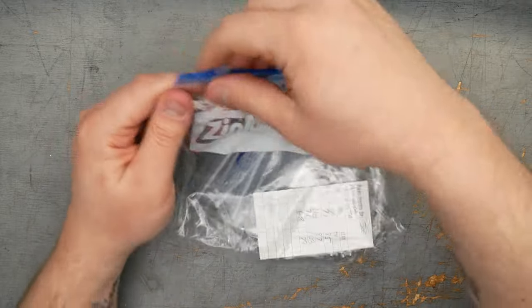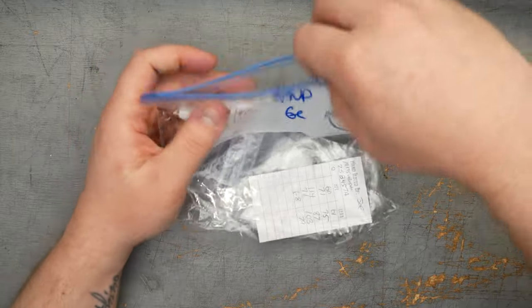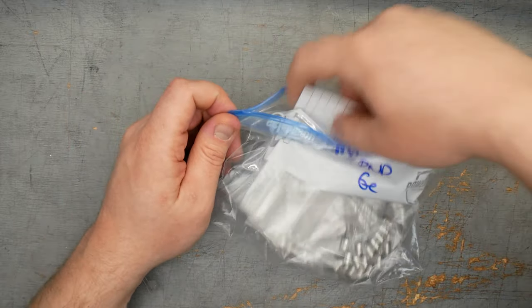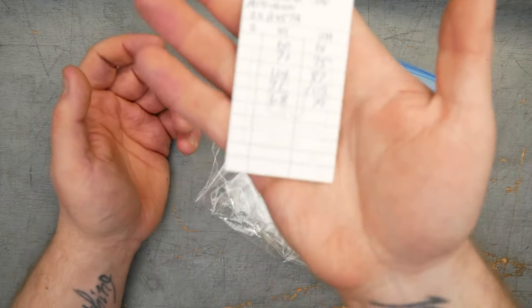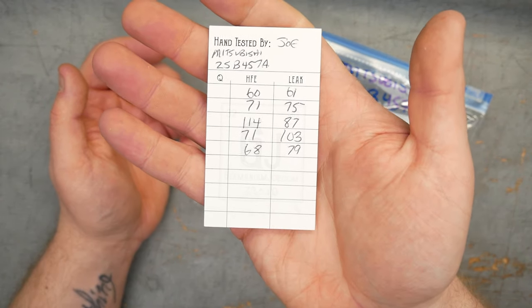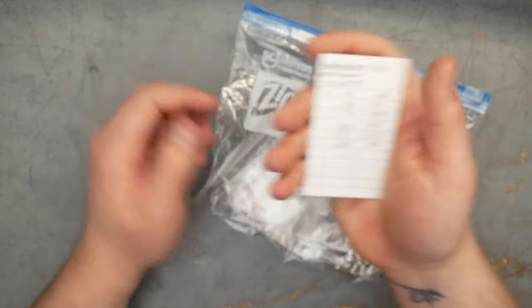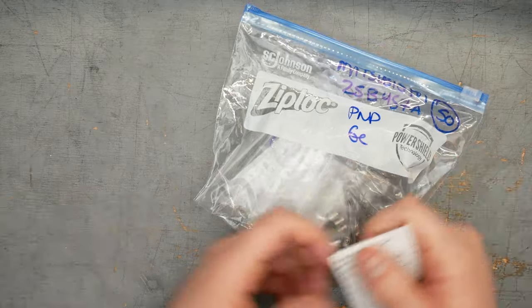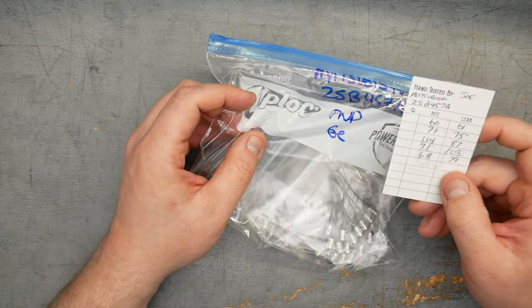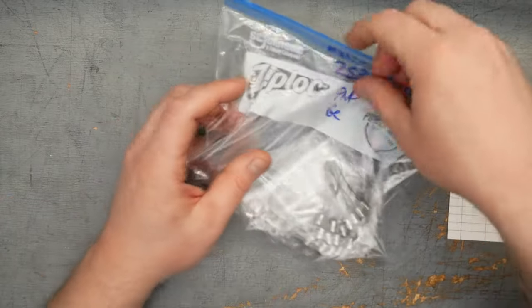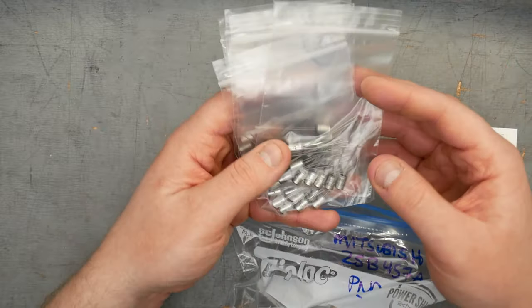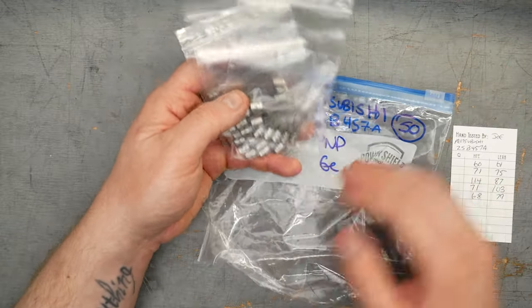Same sort of thing. I have broken these up into lots of 10. These are 2SB457As, also PMP germaniums. Here's a set of five tested, sort of the same area as the 4JX germaniums we just looked at. Maybe a little bit higher gain, maybe a little bit higher leakage. And these are Mitsubishi 2SB457As.